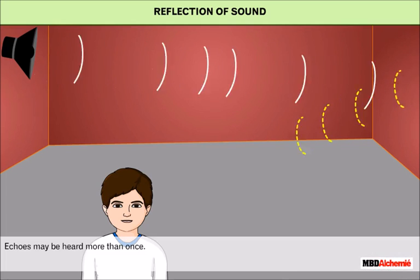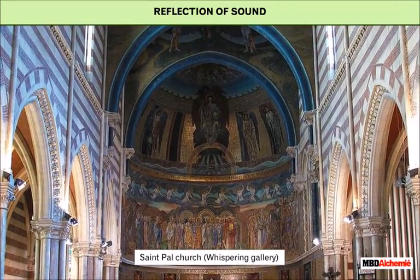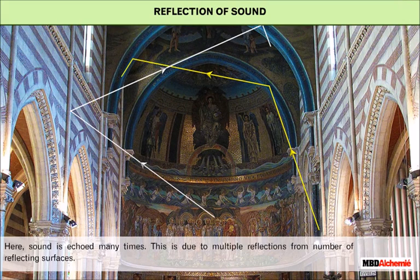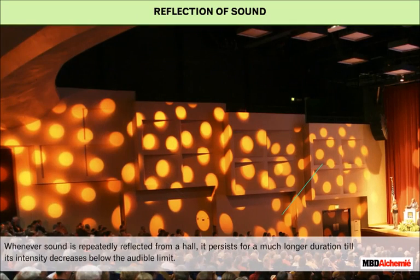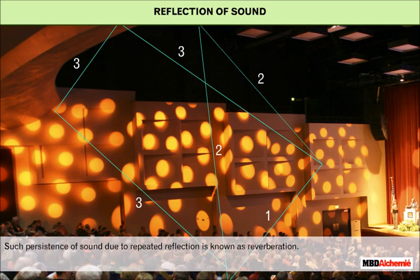Echoes may be heard more than once. St. Paul Church in London is known as Whispering Gallery, where sound is echoed many times due to multiple reflections from a number of reflecting surfaces. Whenever sound is repeatedly reflected from a hall, it persists for a much longer duration until its intensity decreases below the audible limit. Such persistence of sound due to repeated reflection is known as reverberation.